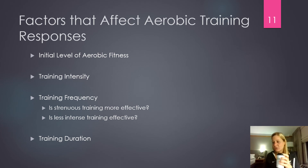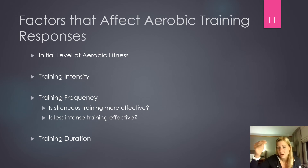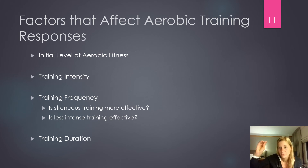Factors that affect training responses: first is initial fitness level. People with low fitness to start have a greater capacity to improve. If you can only run 11-minute miles, you have a greater capacity to potentially improve. An elite athlete who can already run a five-minute mile can't improve as much because they're already closer to their ceiling. The same is true in the weight room — a beginner has huge capacity to improve strength because they're starting from a low baseline.